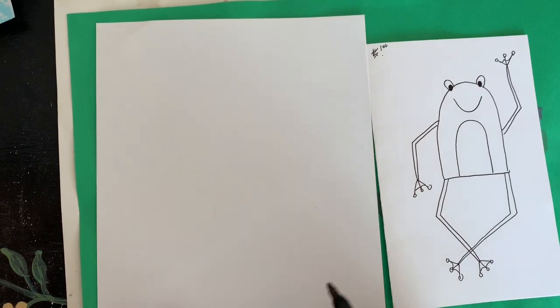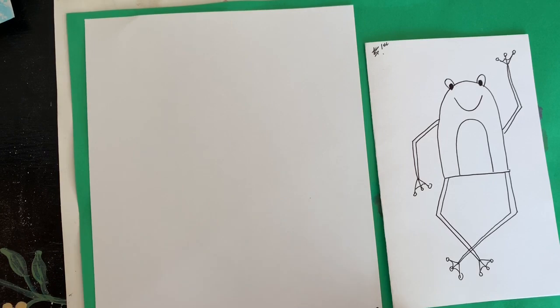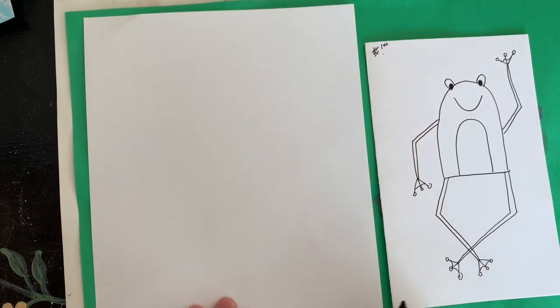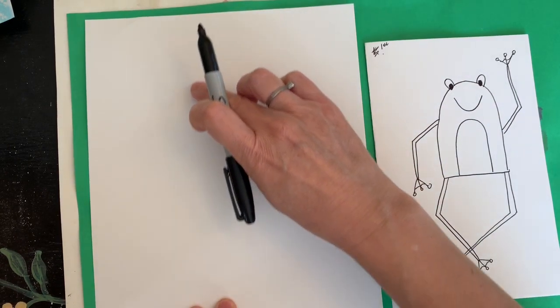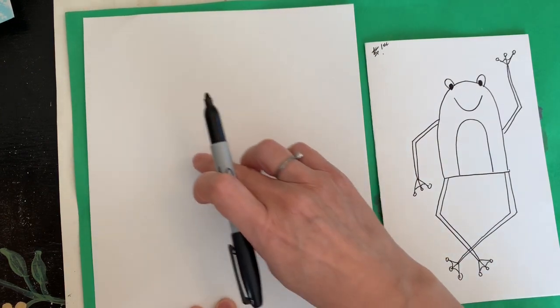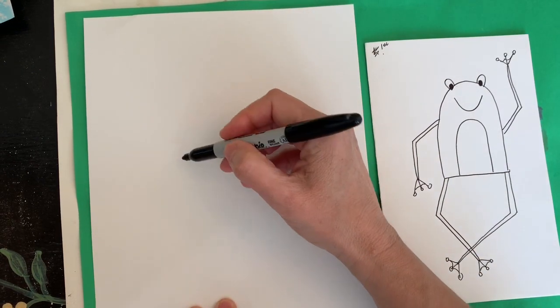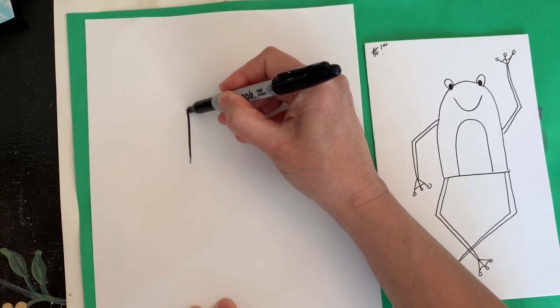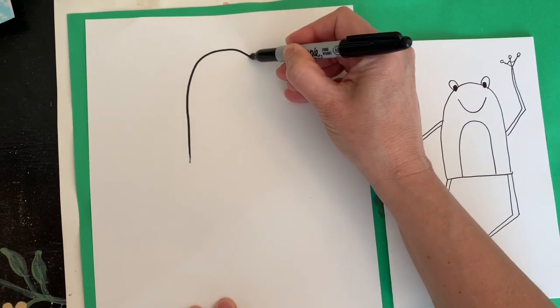The first shape that you need to make - and by the way you can make this as big or as small as you like - I'm going to do the body up a little bit like this because I want to leave room down here for the legs. Right about in the middle of my paper, I'm going to do an upside down U.